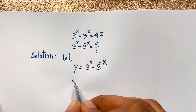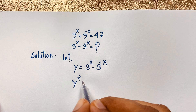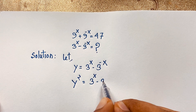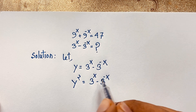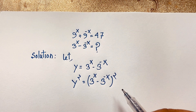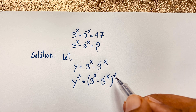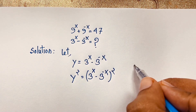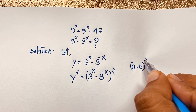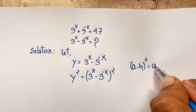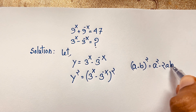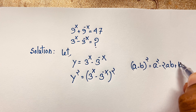Now I use both sides whole square. So y squared equals the quantity 3 to the power x minus 3 to the power minus x, all squared. Now according to the algebraic identity, we know that (a minus b) squared is equal to a squared minus 2ab plus b squared.